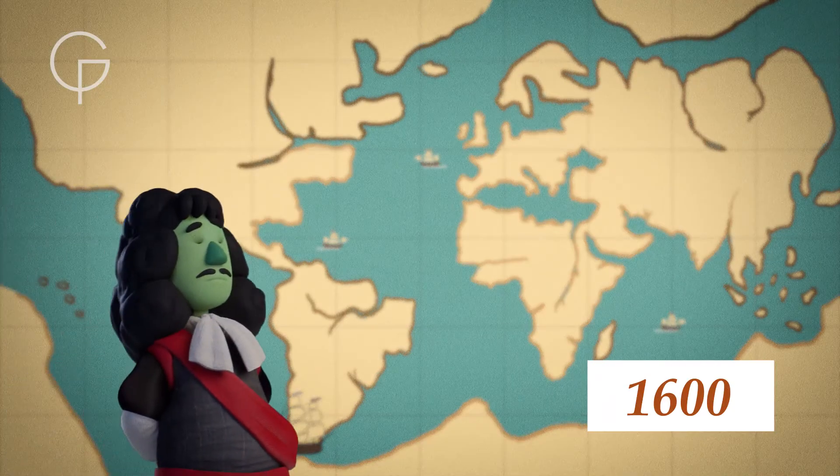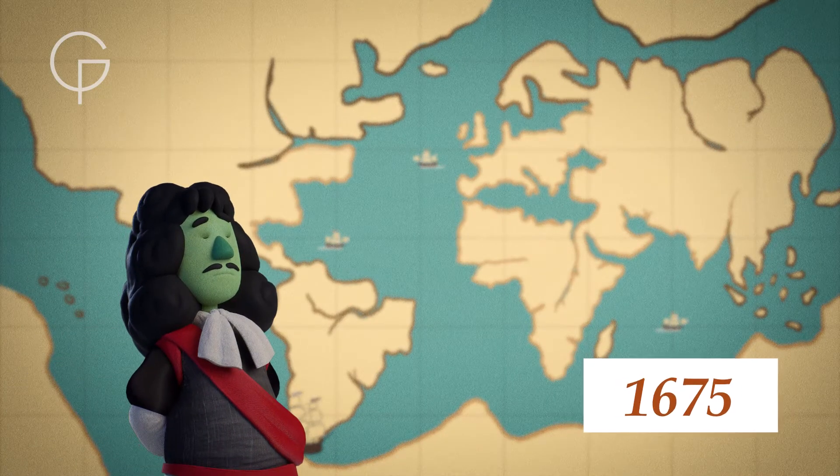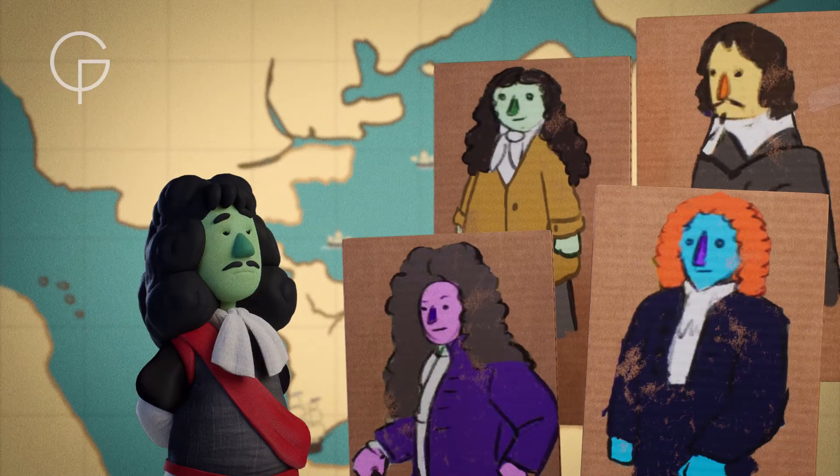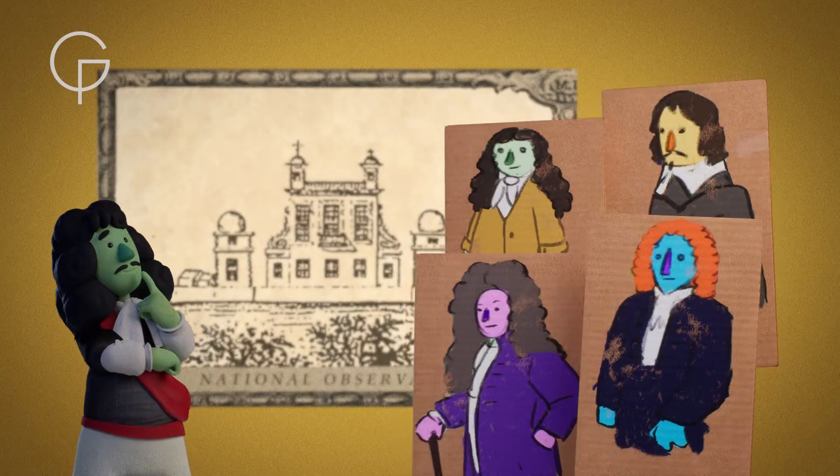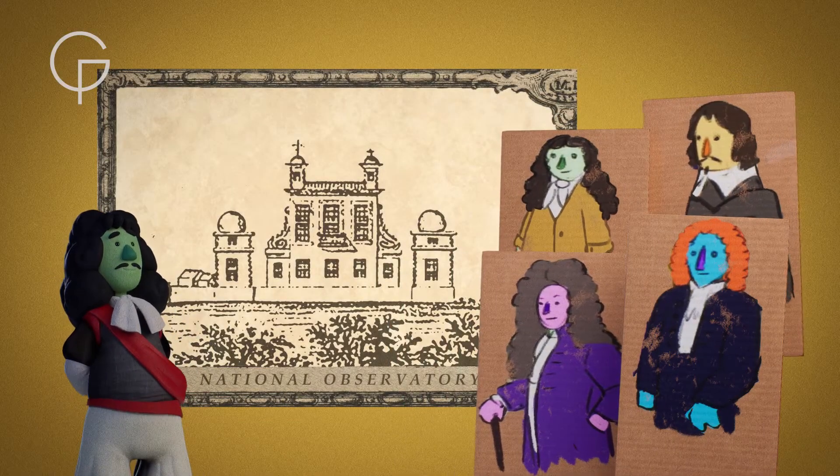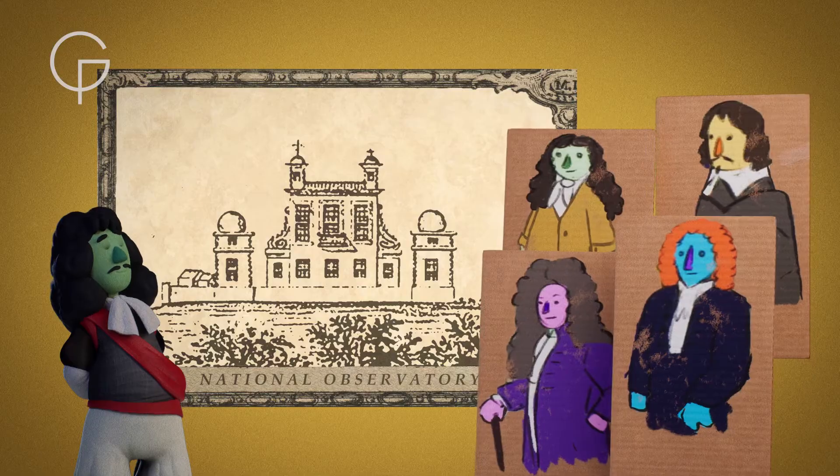King Charles II didn't want Britain to be left behind, and in 1675 was convinced by some of the most influential people at the time to build a national observatory to investigate if finding longitude using the moon and the stars would work.